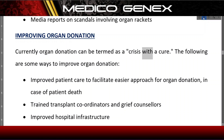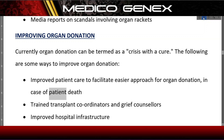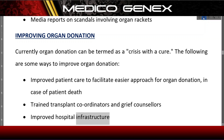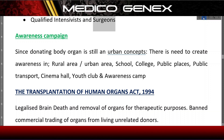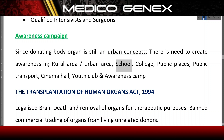Improving organ donation: organ donation can be termed as a crisis with a cure. Some ways to improve it include improved patient care to facilitate easier approach to organ donation in case of patient death, training transplant coordinators and grief counselors, improved hospital infrastructure, qualified intensivists and surgeons, and awareness campaigns. Since donating body organs is still an urban concept, there is a need to create awareness in rural and urban areas, schools, colleges, public places, public transport, cinema halls, youth clubs, and awareness camps.